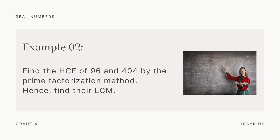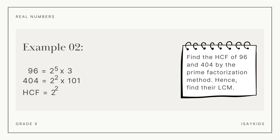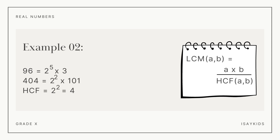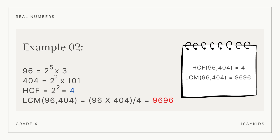Find the HCF of 96 and 404 by the prime factorization method and hence find their LCM. Prime factors of 96 are 2 raised to the power 5 and 3. Prime factors of 404 are 2 raised to the power 2 and 101. Hence, their HCF is 2 raised to the power 2, which is 4. Now, LCM is the product of the numbers divided by their HCF, and hence LCM is 96 into 404 divided by 4, which gives us 9,696. Interesting, right?